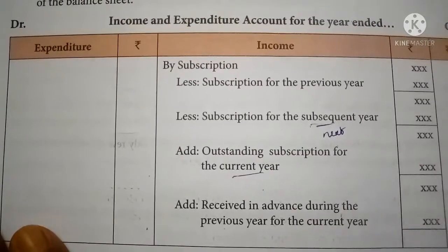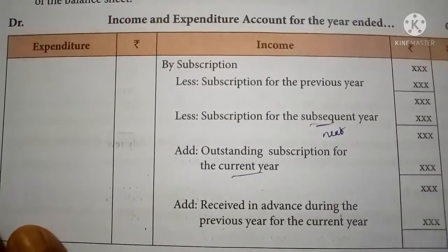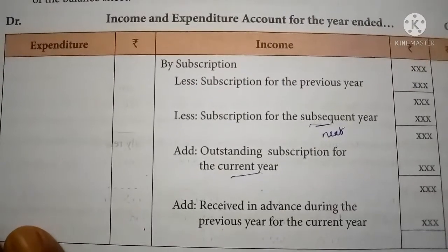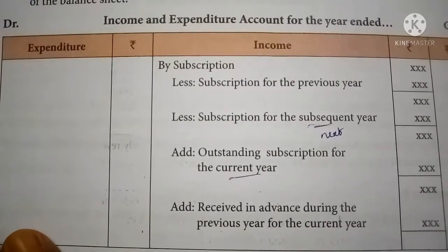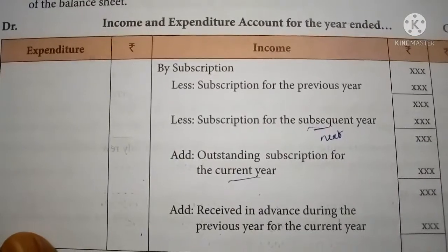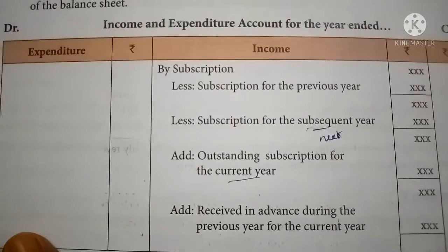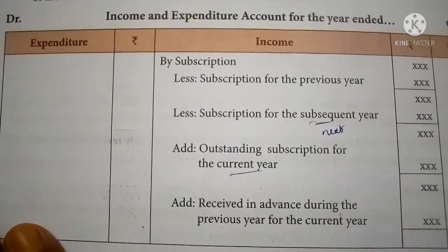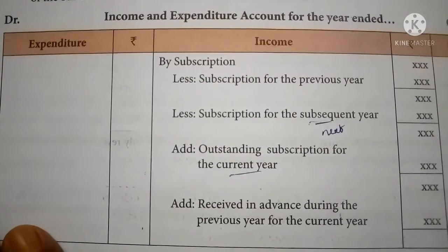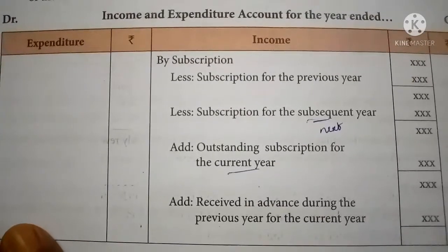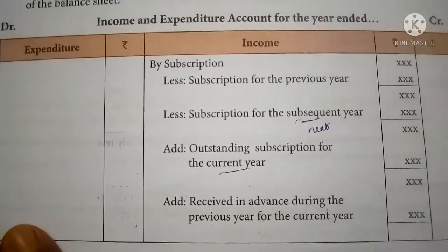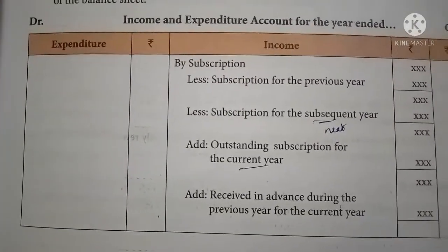The total subscription received during the current year is recorded first. Then: subtract subscription for the previous year; subtract subscription received in advance for the subsequent (next) year; add outstanding subscription for the current year; and add subscription received in advance during the previous year but meant for the current year. In total, four adjustments are made to the subscription item in the Income and Expenditure account.